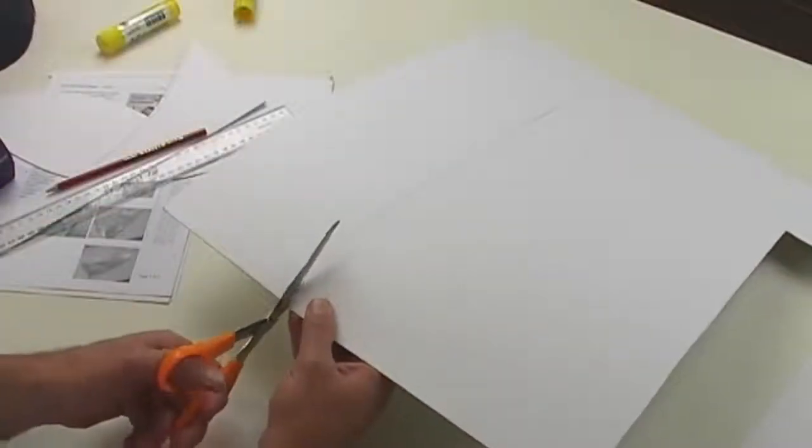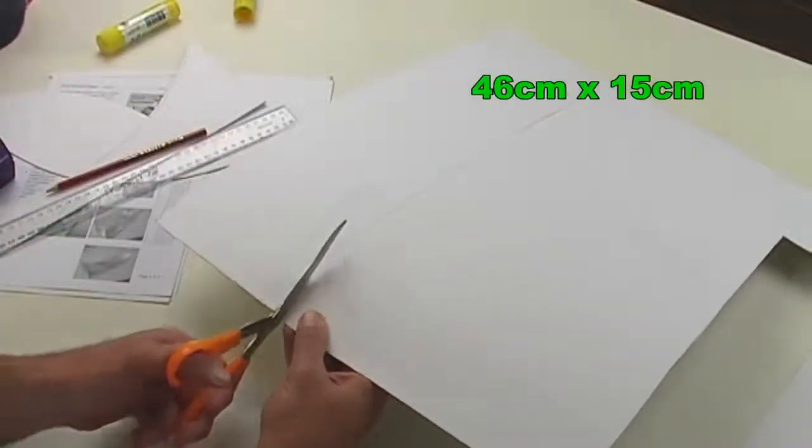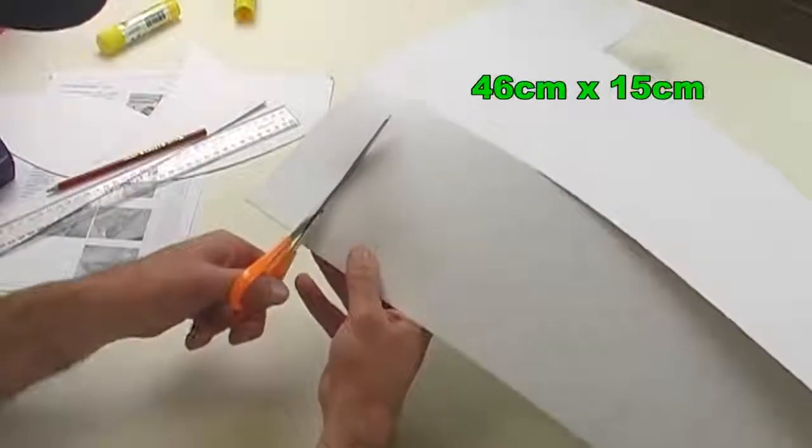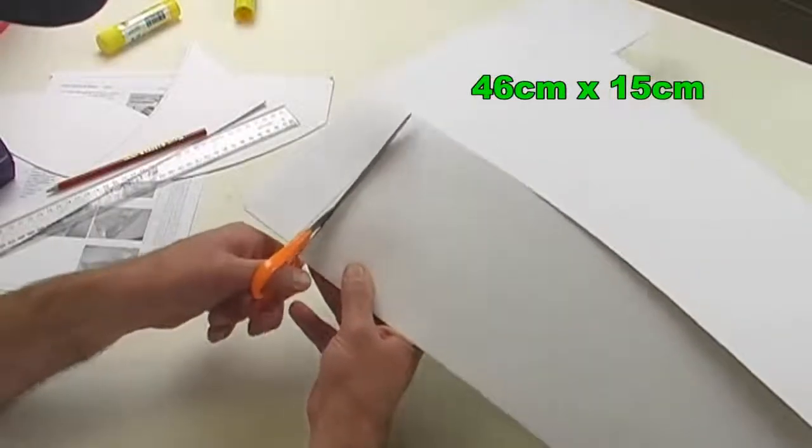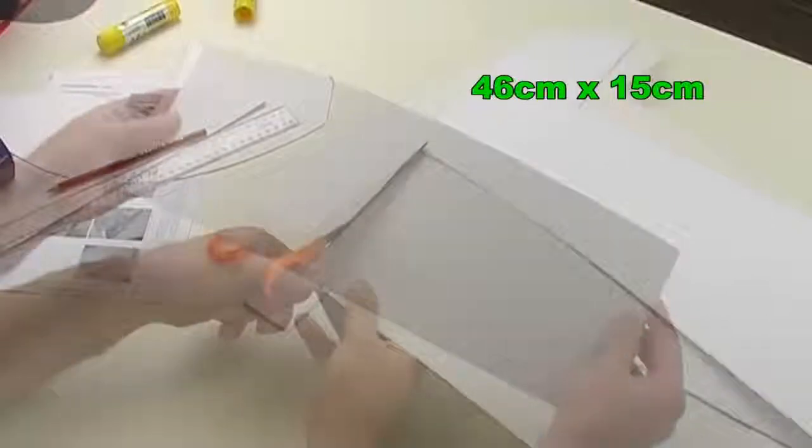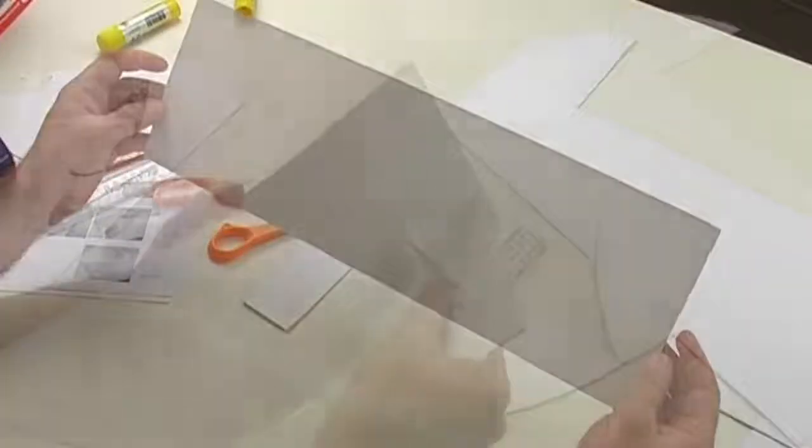Next, cut out a large rectangular piece of card, measuring 46 centimetres by 15 centimetres. This piece of card will eventually be covered with aluminium foil to become the reflecting surface.